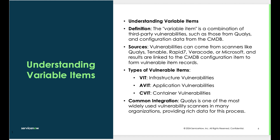By definition, a vulnerable item is a combination of third-party vulnerabilities such as Qualys and the configuration data from the CMDB. We work with many vendors — we're going over Qualys in this one, but there are others: Tenable, Rapid7, Veracode, Microsoft, and similar tools whose data we can ingest.